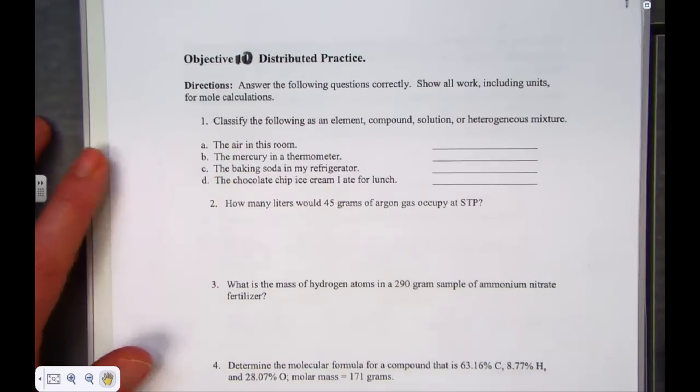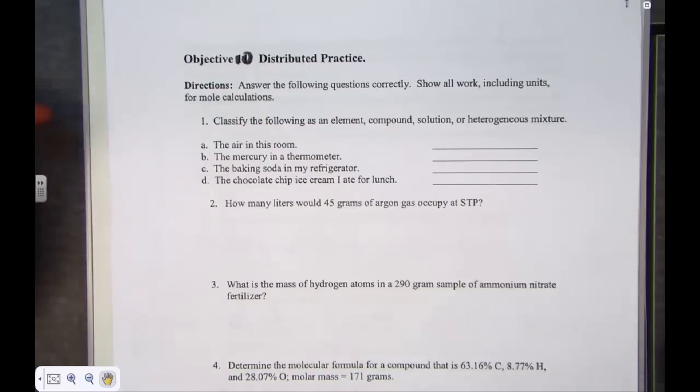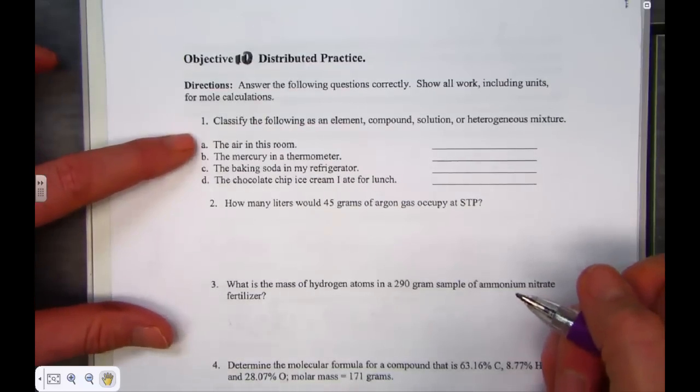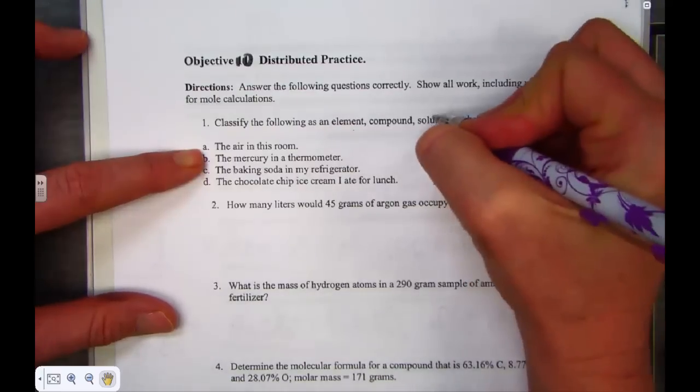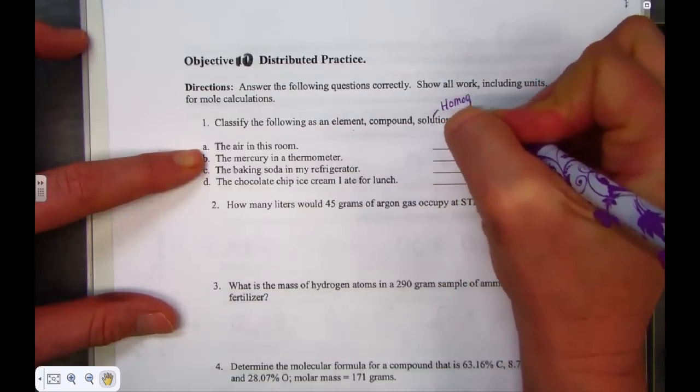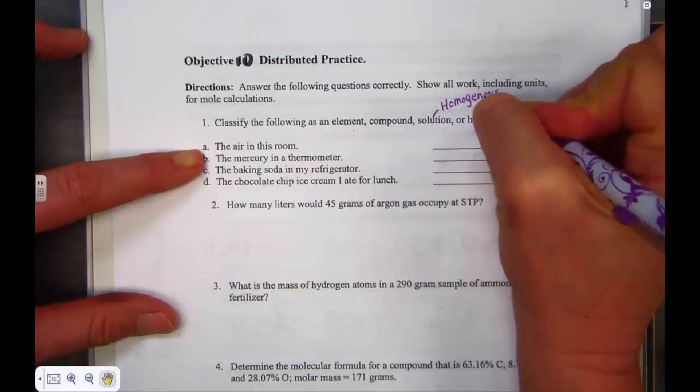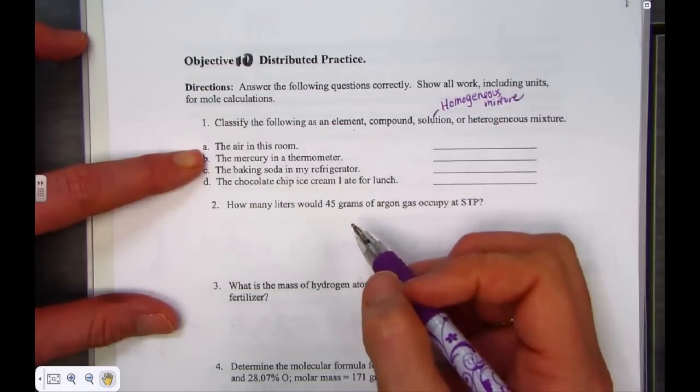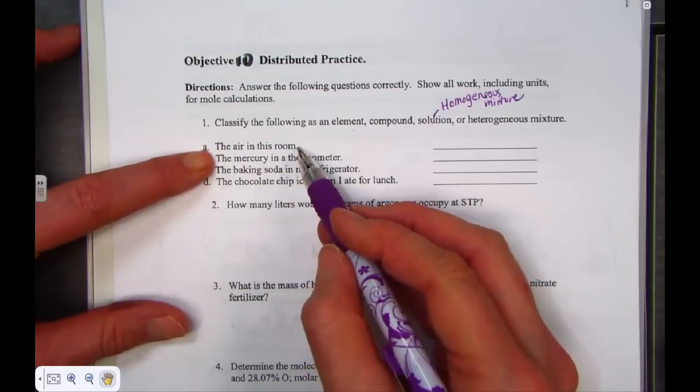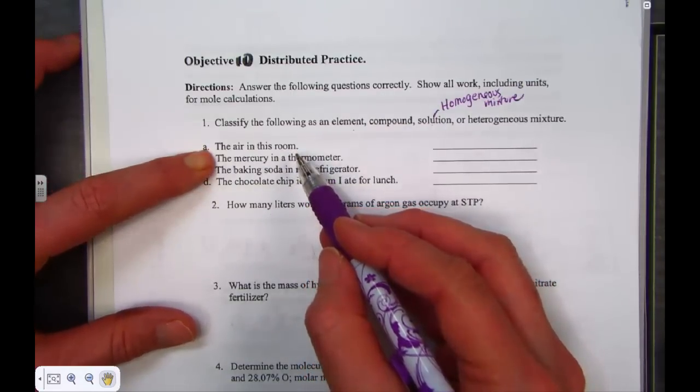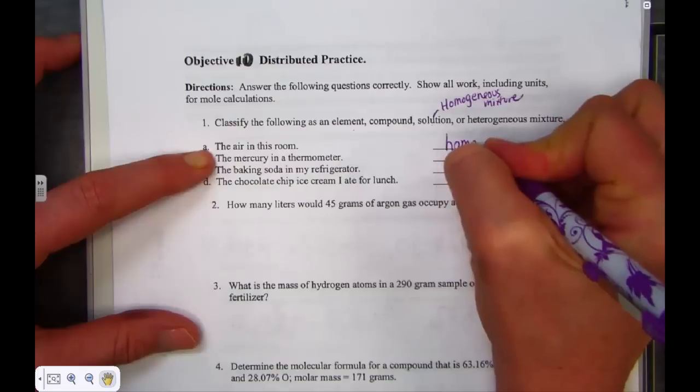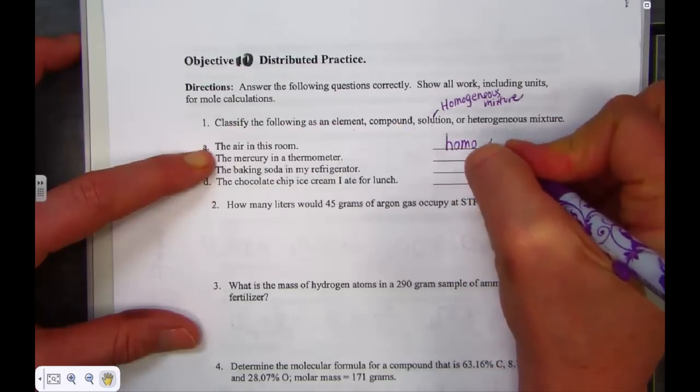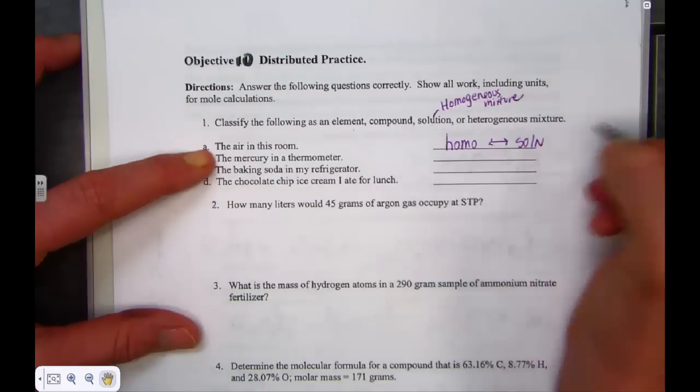We have one more to complete for our practice test B. That's a distributive practice question. Let's do a little review looking at objective ten, a distributive practice. The first question will ask us to classify as an element, compound, solution, or heterogeneous mixture. This is my sneaky way of remembering that solution is another word to say it's a homogeneous mixture. Same word. Air in the room. The air is a blend of many different gases, and it's blended to create an evenly distributed mixture. Mixtures that are blended throughout are called homogeneous. And that's the same as saying air is a solution.